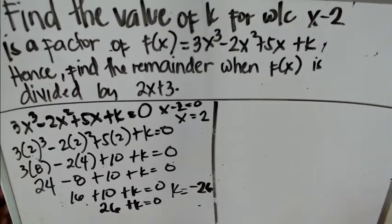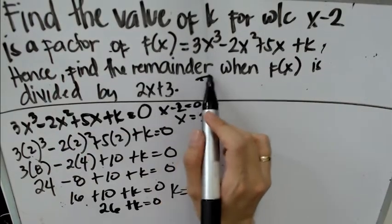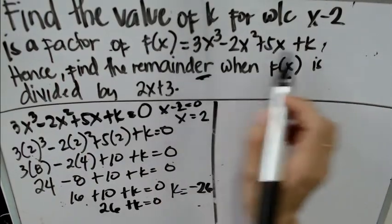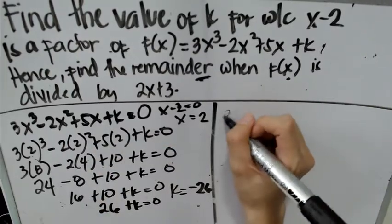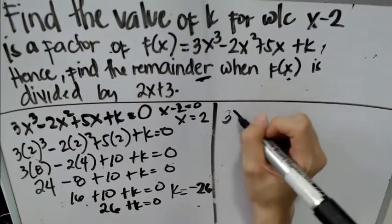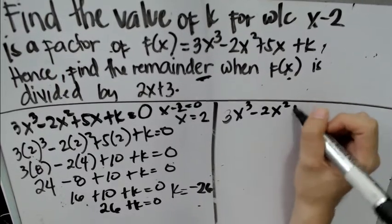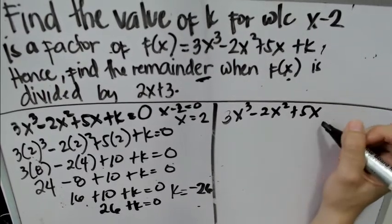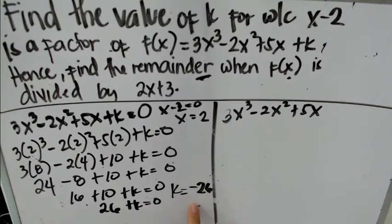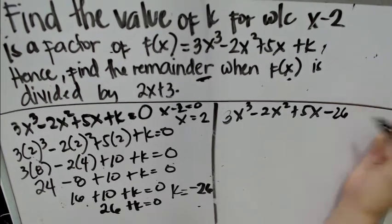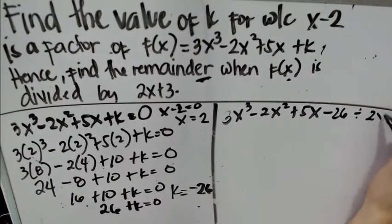We're not done yet. According to the given problem, we need to find the remainder when the given function is divided by 2x plus 3. We proceed by rewriting the given function: 3x cubed minus 2x squared plus 5x plus k, where k is negative 26.